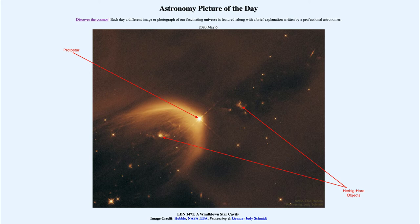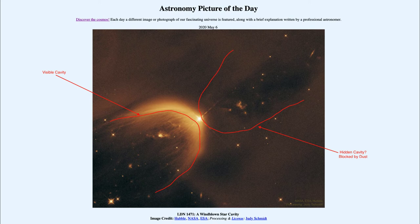We wouldn't expect that the star would just put material out in one direction. We would expect that there would be two, so there would be a cavity on the other side as well. So why isn't it visible? Well, there is more dust on one side, up to the right, and it's hidden.